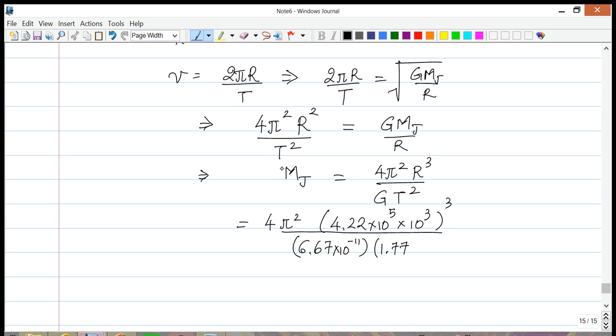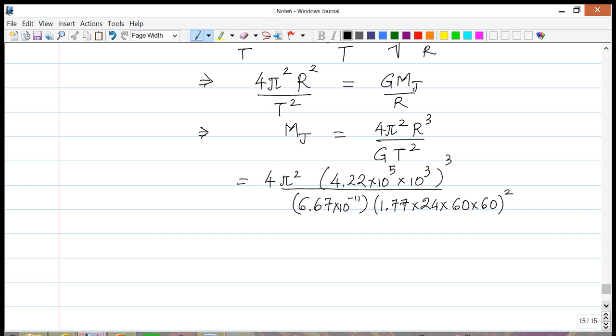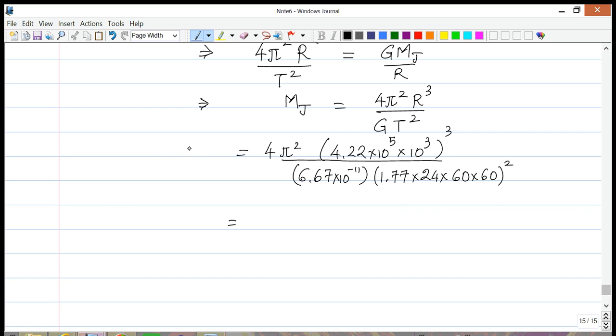And then divided by the time period, which is 1.77 days. So let's convert 1.77 days to seconds: 1.77 days, a day has 24 hours, each hour has 60 minutes, and each minute has 60 seconds. We have to square this. This is a very tedious calculation. Once again, what I would recommend is doing it very carefully: evaluate the numerator first, evaluate the denominator separately, and then do it.